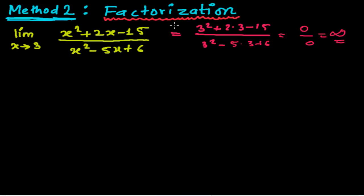This is not the way of doing this. We have to use the factorization method to solve this kind of problem. After factorization we'll get some real values, and using the plugging of the value 3 we can easily evaluate the limit. So I'm factorizing it: limit when x tends to 3, and here we have x squared plus 2x minus 15.